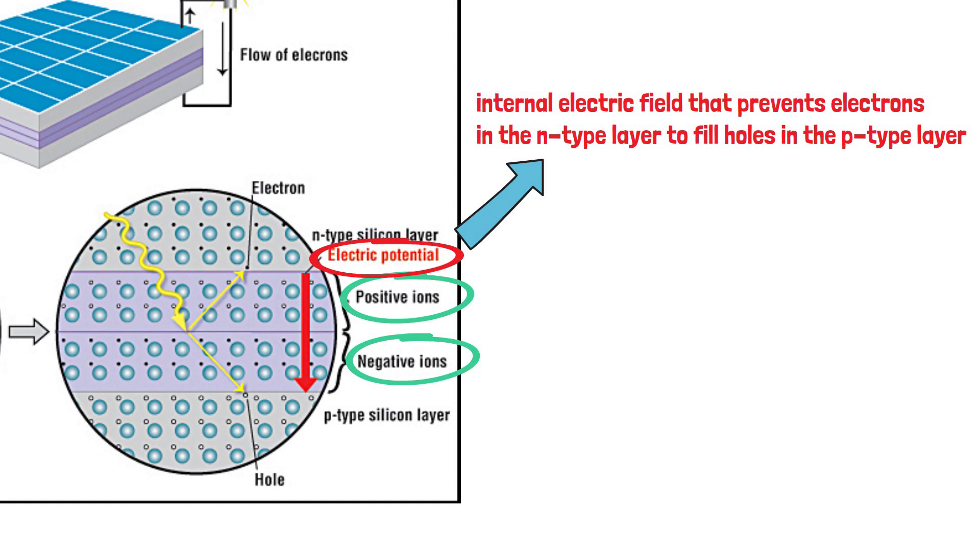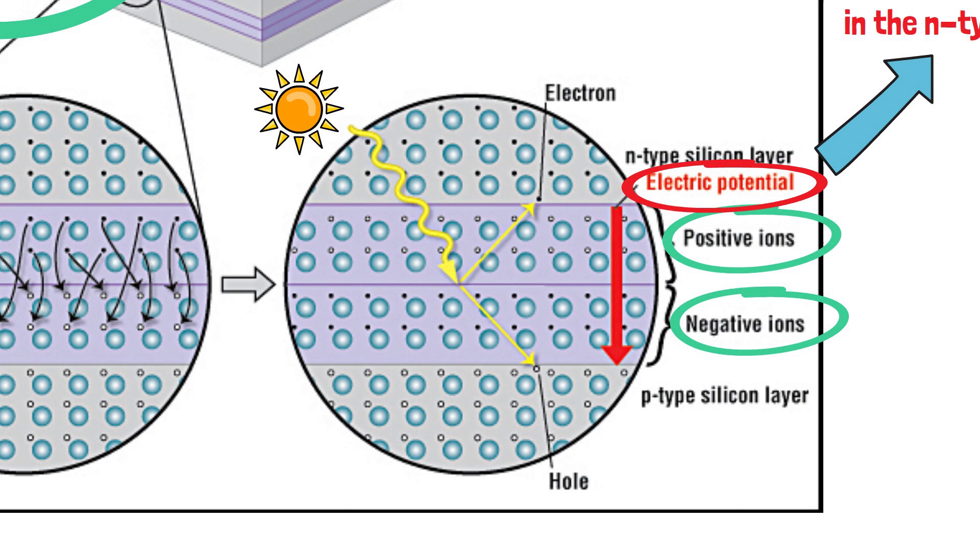When sunlight strikes a solar cell, electrons in the silicon are ejected, which results in the formation of holes, the vacancies left behind by the escaping electrons. If this happens in the electric field, the field will move electrons to the n-type layer and holes to the p-type layer.